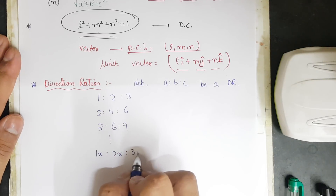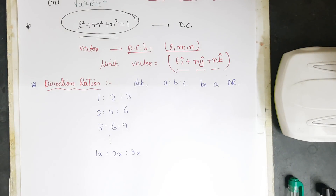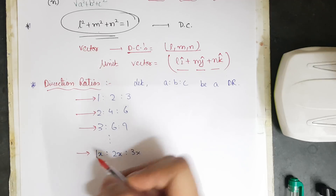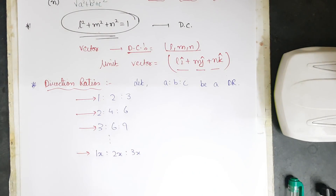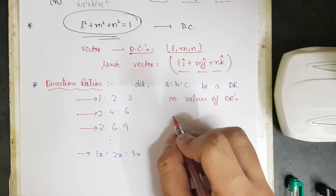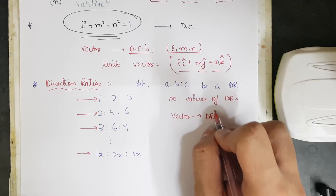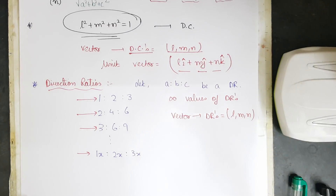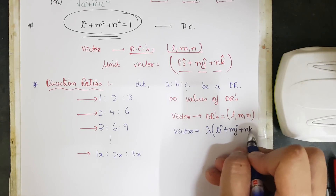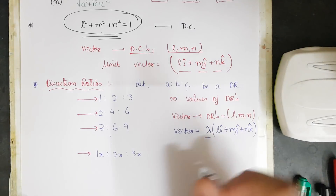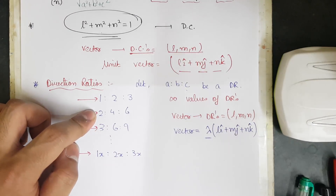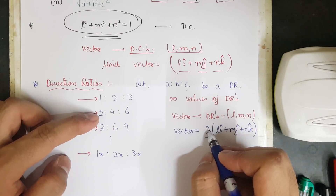A direction ratio can have infinite values for any vector — it was 1:2:3, here 2:4:6, here 3:6:9, and similarly x:2x:3x. So for any vector whose DRs are l, m, n, the vector can be written as λ(l·î + m·ĵ + n·k̂). Lambda is the constant — if λ=1 we get l·î + m·ĵ + n·k̂, if λ=2 or λ=3 we get scaled versions.